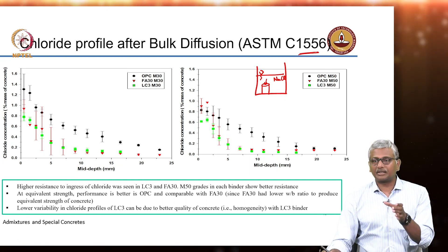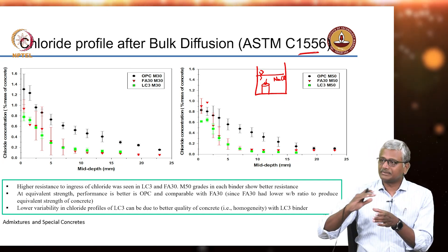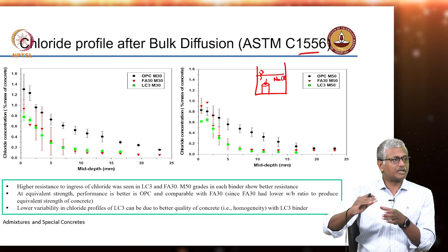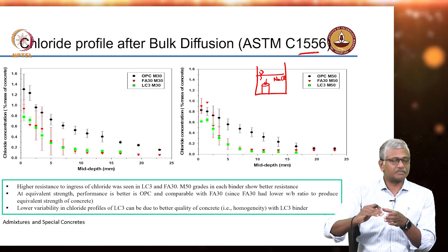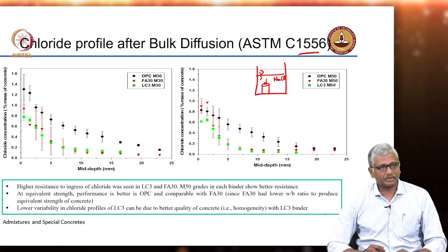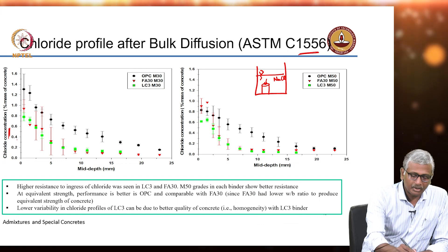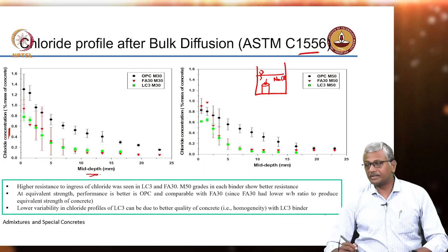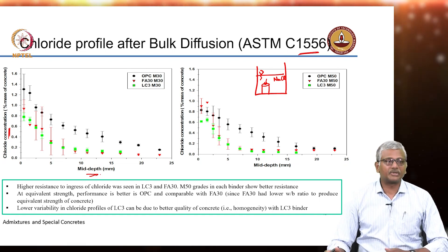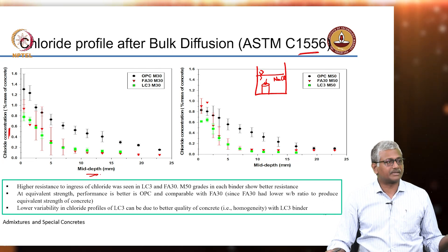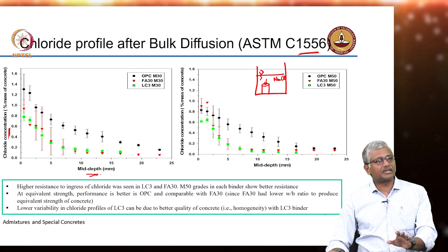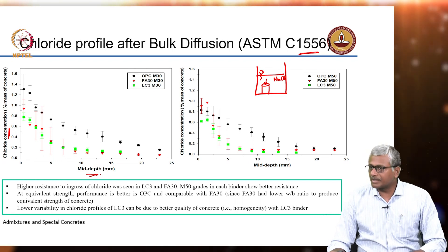After removing the specimen, you grind the surface in layers — the first 1 mm, then 2–3 mm, then 4–7 mm, and so on — and for each layer you determine the chloride content. Then you plot chloride concentration versus the mid-depth of each layer. It is a very laborious process, which is why most people opt for electrical-based methods like the rapid chloride penetration test or the migration test. But if you want to study chloride diffusion alone, this is the right method.